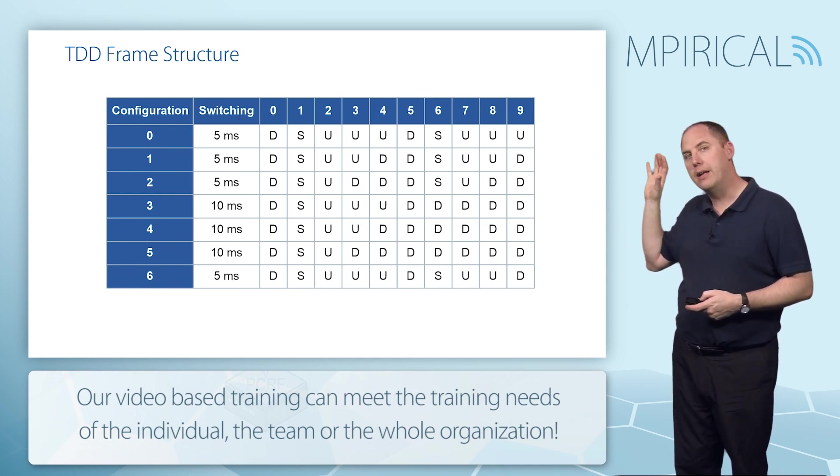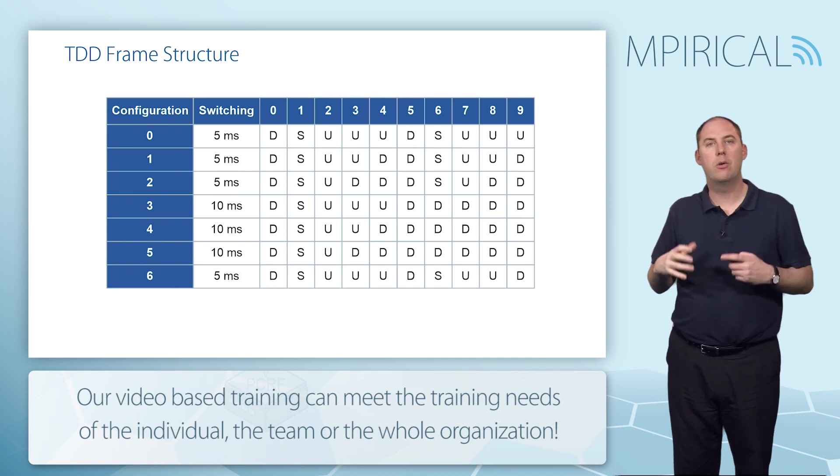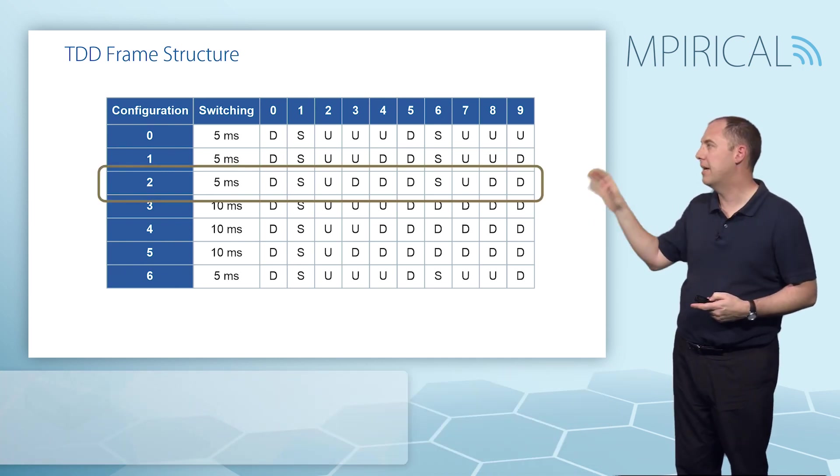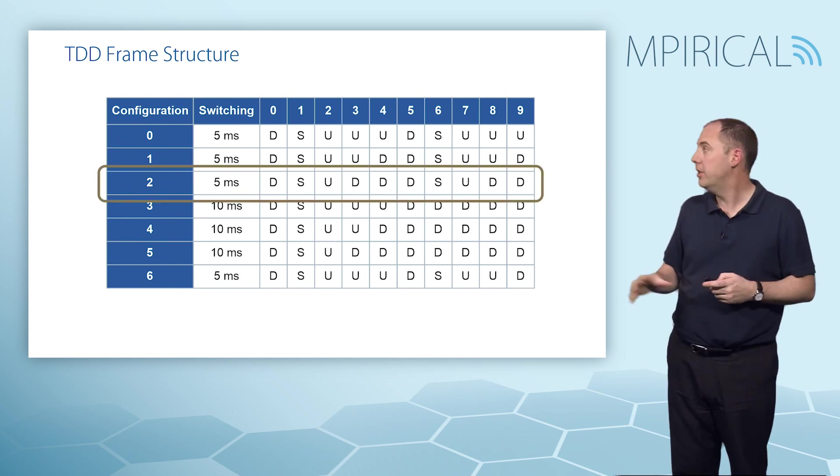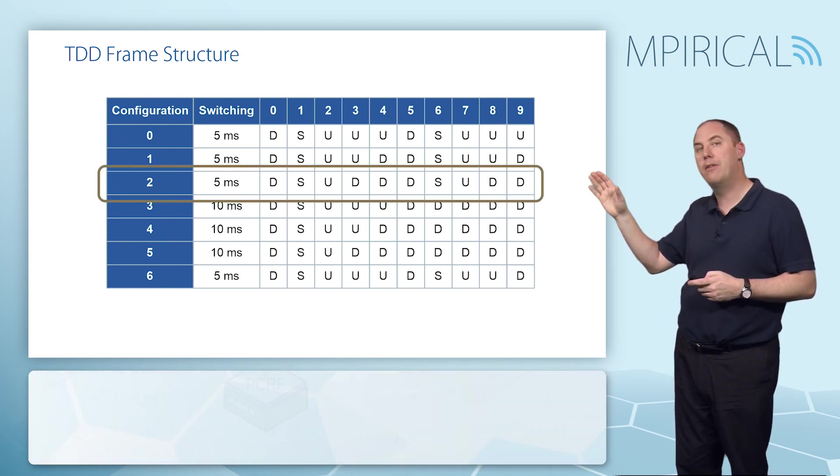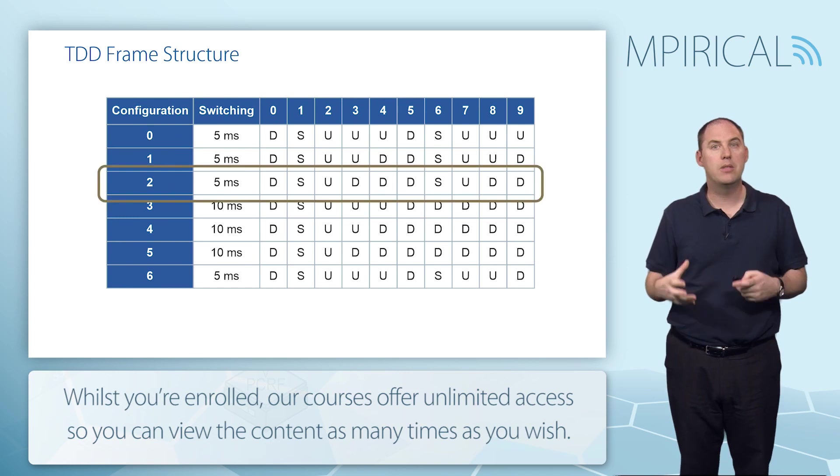You'll find there are different configurations. An eNodeB will be configured, for example, with configuration number two. Configuration number two denotes that we have a number of D, downlink frames, S, special frames, and U, uplink frames.